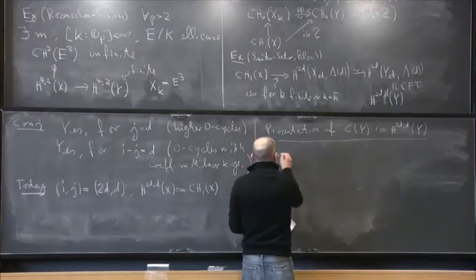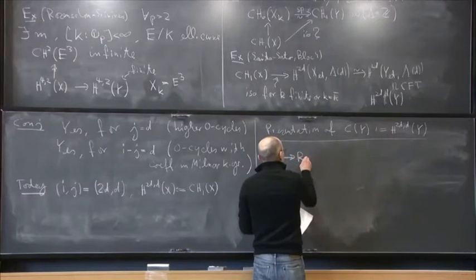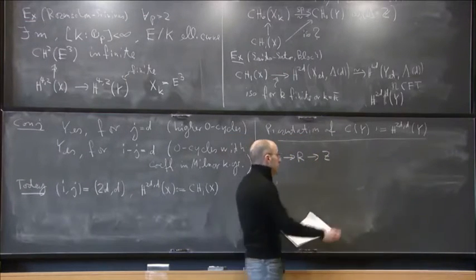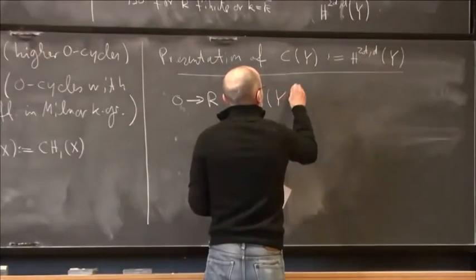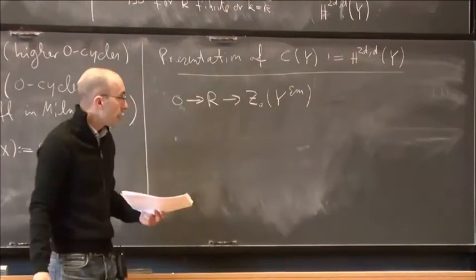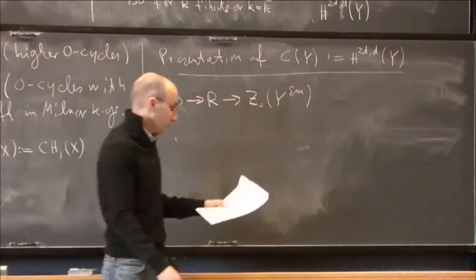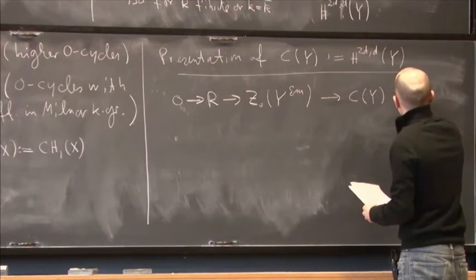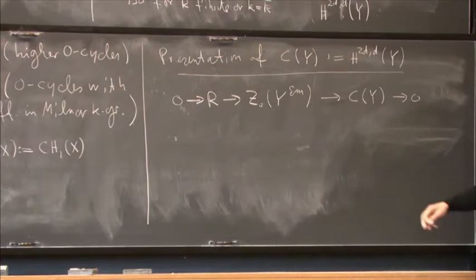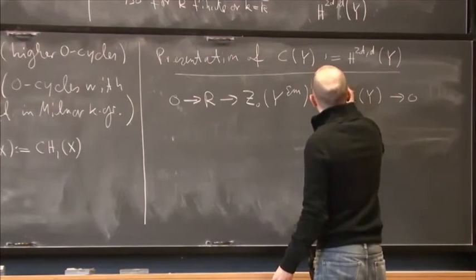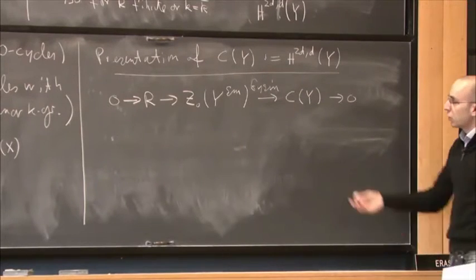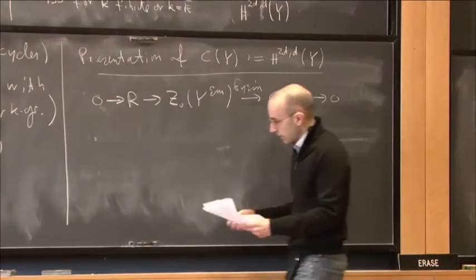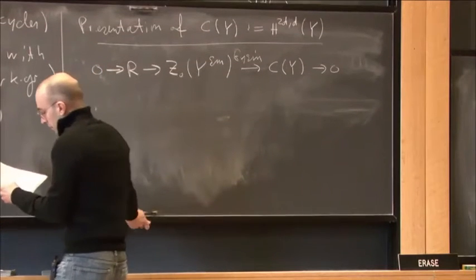For notational reasons, let us write C(Y) for the motivic cohomology group H^{2d,d}(Y). I give the following presentation: there exists a short exact sequence where R is a group of relations, this motivic cohomology is generated by zero cycles supported on the smooth locus of Y — Y being a simple normal crossing variety over k — and there exists a map to C(Y) which is a Gysin map.